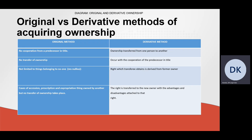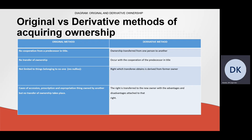In the case of original acquisition of ownership, there is no cooperation from a predecessor in title. There is no transfer of ownership. It is not limited to things belonging to no one, and examples of original acquisition of ownership would be in the case of accession, prescription, and expropriation of the thing owned by another, but not to the transfer of ownership.